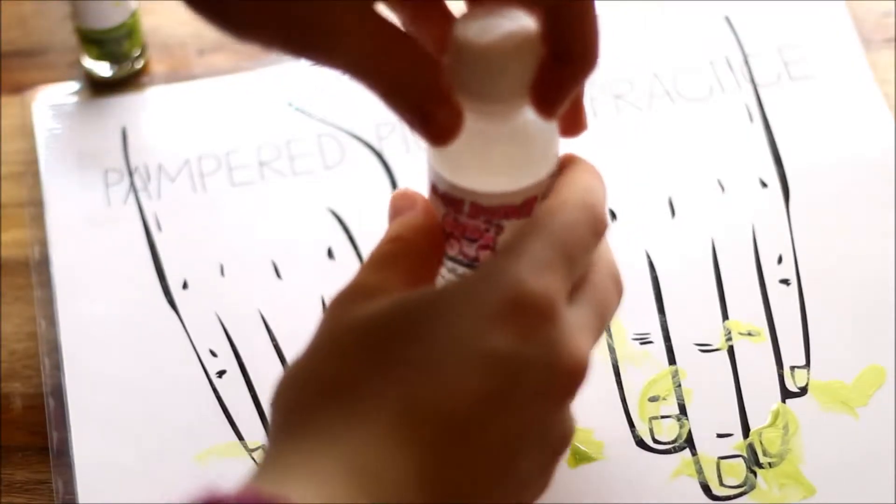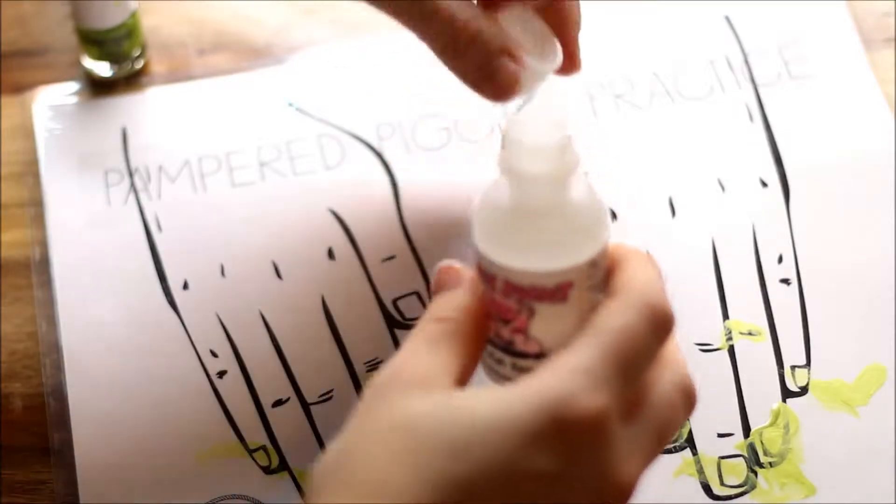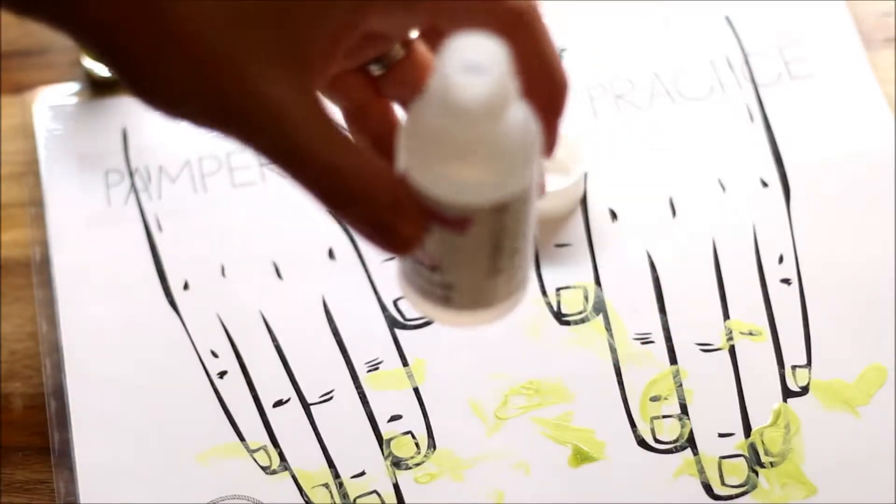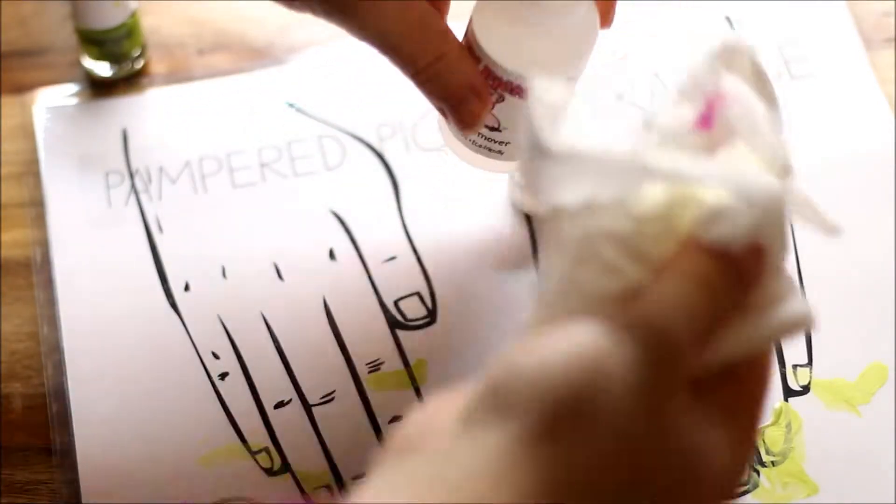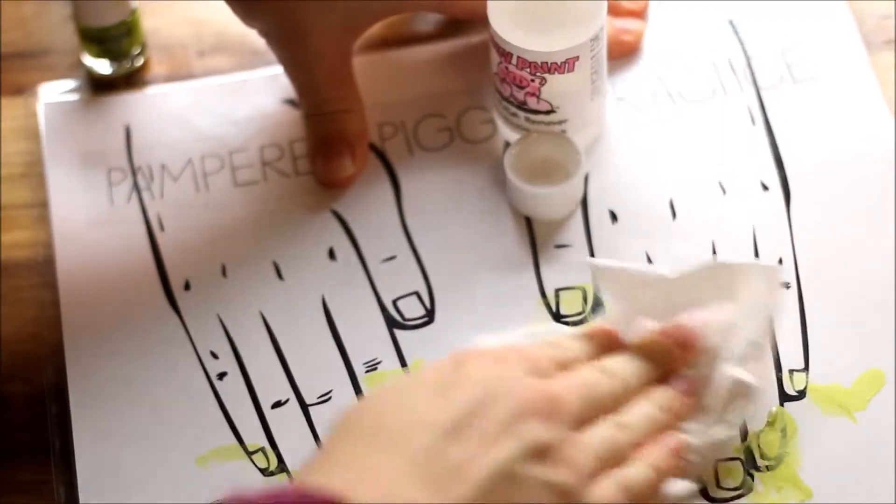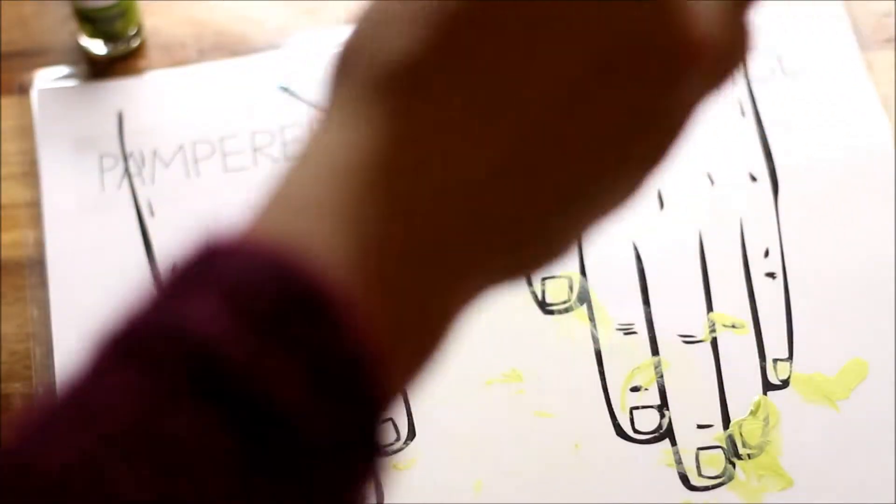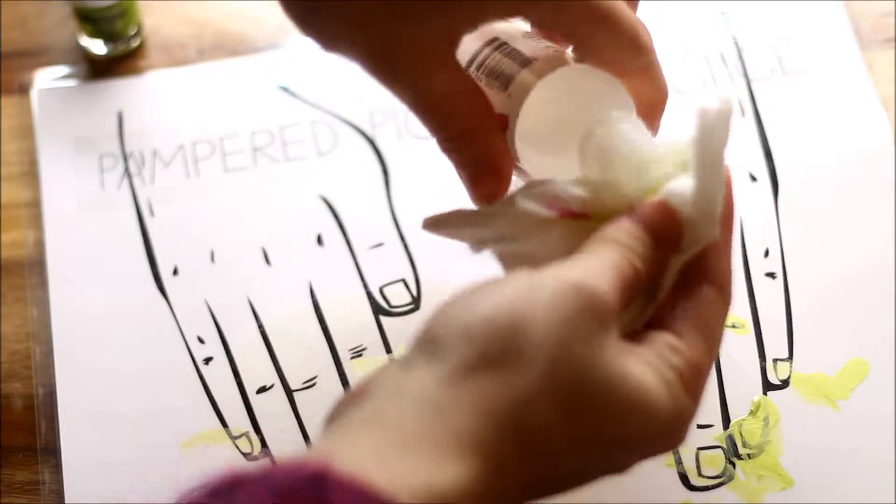Okay, so this one has already been painted and we are going to use some Piggy Paint Nail Polish Remover to get all of the nail polish off of our printable so that we can use it again.